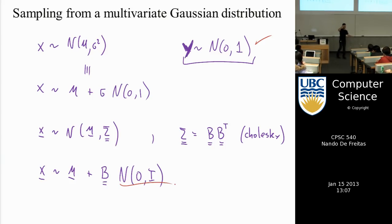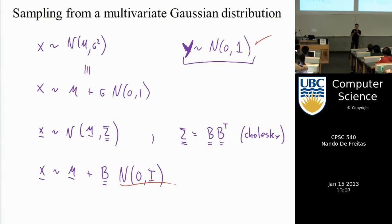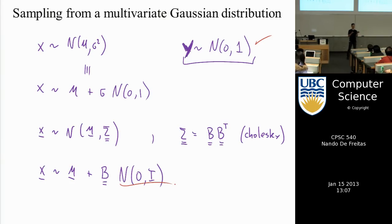The process of learning from data is going from real-world samples — images, things people do — to a model. Using this Gaussian model, the process of imagining is the opposite: you have a model and generate samples. If you can imagine the world accurately and your predictions match reality, that means you understand the world.